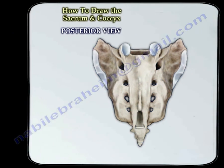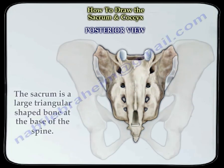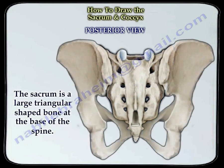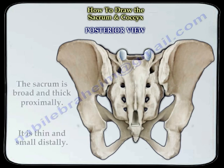Here you can see from the back that the sacrum is a large triangular-shaped bone at the base of the spine. The sacrum is broad and thick proximally, and it is thin and small distally.